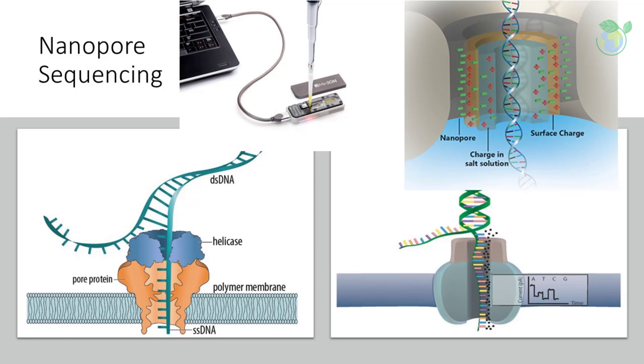When a molecule passes through a nanopore, the current is disrupted, producing a characteristic squiggle. The squiggle is then decoded using base-calling algorithms to determine the DNA or RNA sequence in real-time.